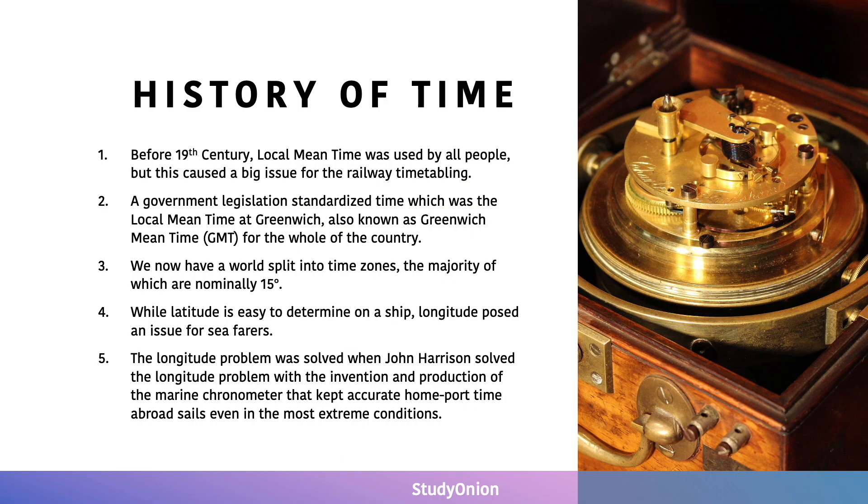Let's take a quick look at the history of time. Before the 19th century, local mean time was used by everyone, but this caused a big issue for railway timetabling in Britain. A government legislation had to standardise time, which was the local mean time in Greenwich, also known as Greenwich mean time for the whole of the country. We now have a world which is split into multiple different time zones, the majority of which are nominally 15 degrees. While latitude is easy for seafarers to determine on a ship, longitude posed an issue for seafarers. The longitude problem had to be solved by John Harrison with the invention and production of a marine chronometer that kept accurate home port time abroad, even in the most extreme conditions.